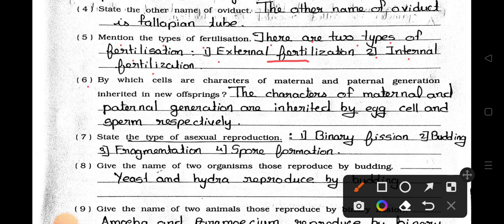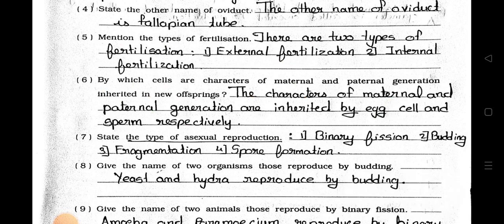Number 6: By which cells are characters of maternal and paternal generation inherited in a new offspring? Answer: The characters of maternal and paternal generation are inherited by egg cell and sperm respectively.